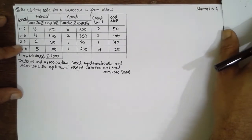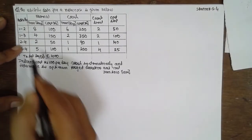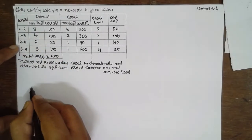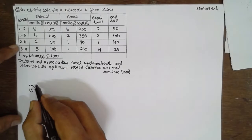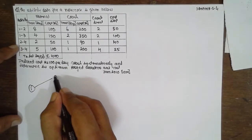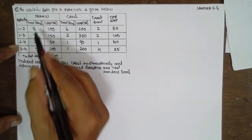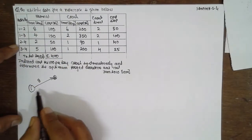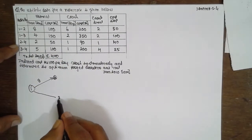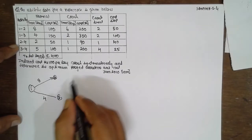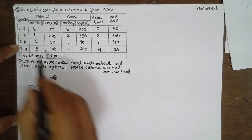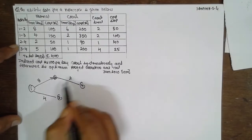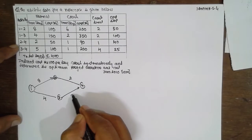Now we are going to draw the network diagram based on the activity. Activity 1 to 2, normal time is 8; 1 to 3, normal time is 4; 2 to 4, it is 2; 3 to 4, it is 5.